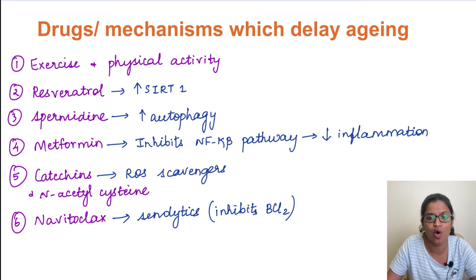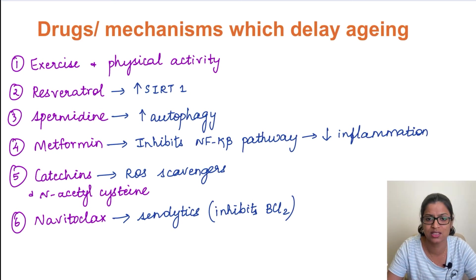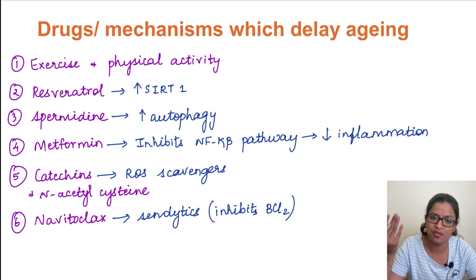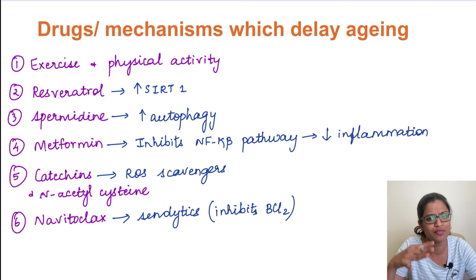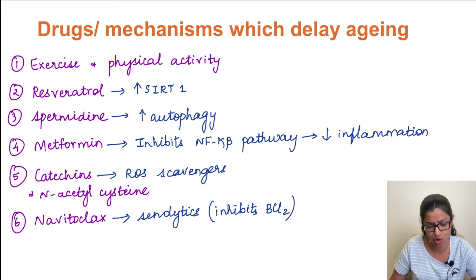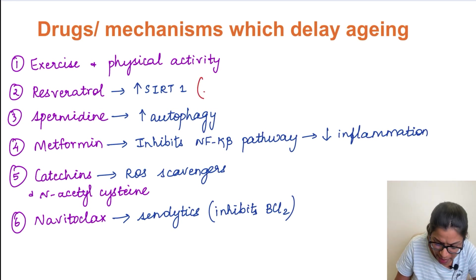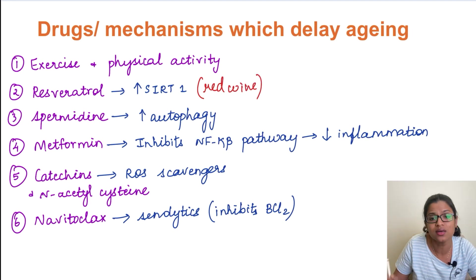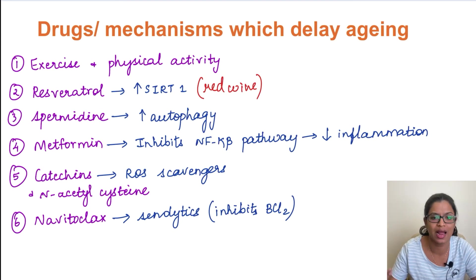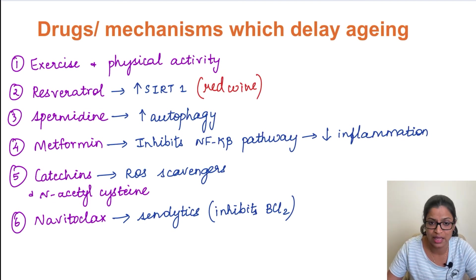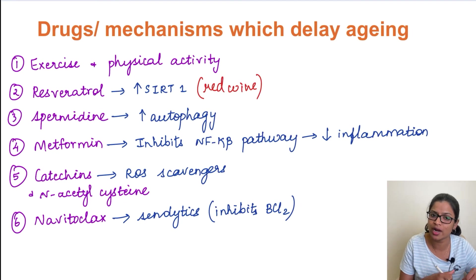Is there something which can prevent or delay cellular aging? Yes! Regular physical exercise — being physically active — has a beneficial effect on metabolism and keeps a person in a state of well-being. Second is resveratrol, a polyphenol present in red wine which is known to increase sirtuins, activating the sirtuin genes. And spermidine is a polyamine which promotes autophagy, preventing misfolded protein accumulation and thus preventing cell stress.